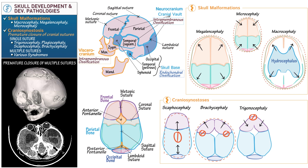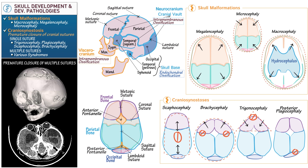Trigonocephaly results in a triangular-shaped head when viewed from above. In lambdoid synostosis, there is posterior plagiocephaly — a twisted skull — due to an inability of one side of the occiput to grow outward, producing an oblique deformity of the posterior calvarial vault. As a practical matter, unilateral coronal synostosis also results in plagiocephaly, as it similarly produces a twisting and oblique appearance of the frontal calvarium.